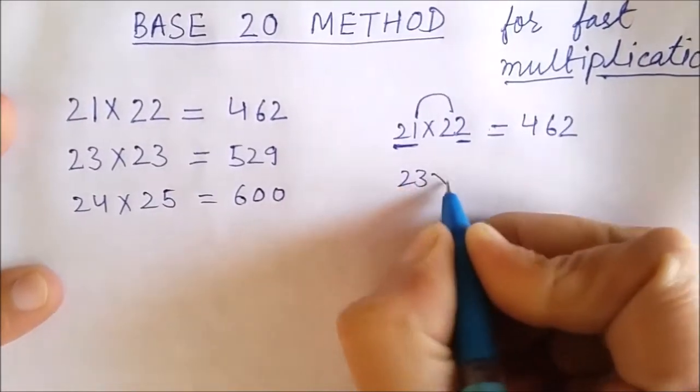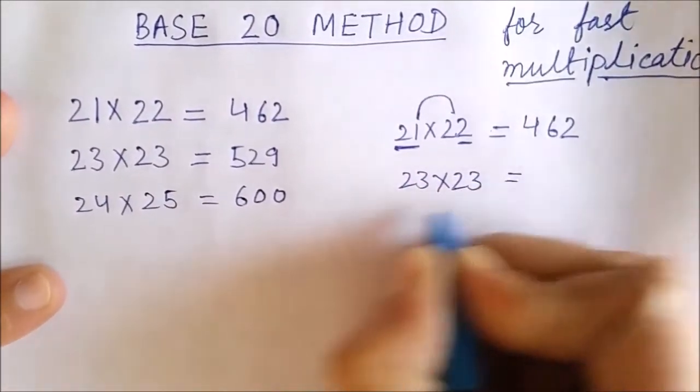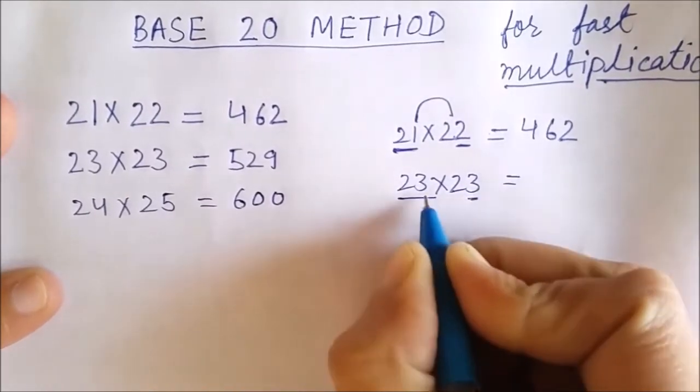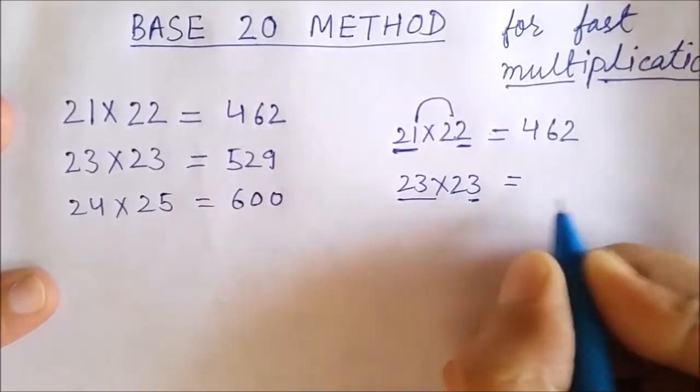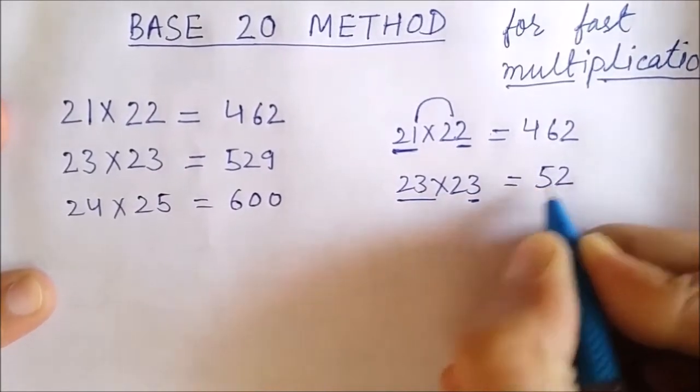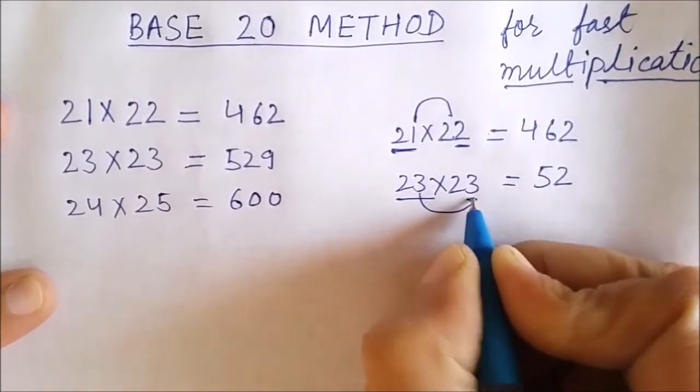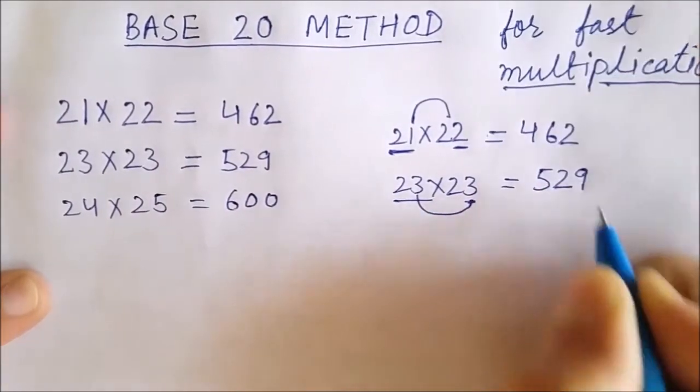For 23 into 23, the same procedure. I added this 3 to this 23. I got 26. Before writing here, I doubled it. This is 52. And then multiplied these 2 threes together. 529.